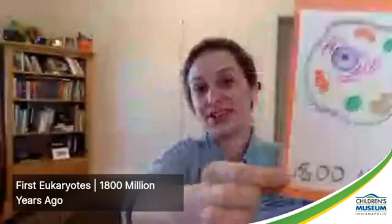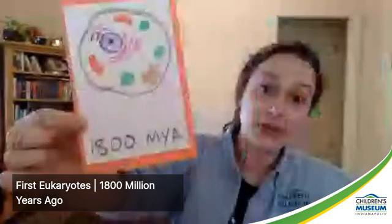Now we're going to start talking about living things. The next event is the first eukaryotes — a special kind of cell with a nucleus. These are really important because they're the basic building blocks that make up a lot of living things today, like people, dogs, and plants. They really set the stage for the life that comes after. The first record of eukaryotes was 1.8 billion years ago — that's the first time these show up in the fossil record.